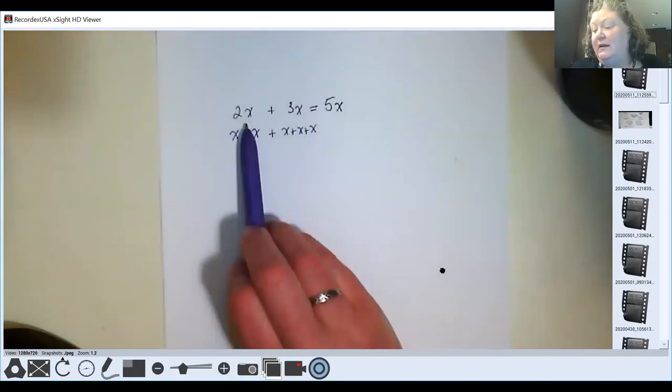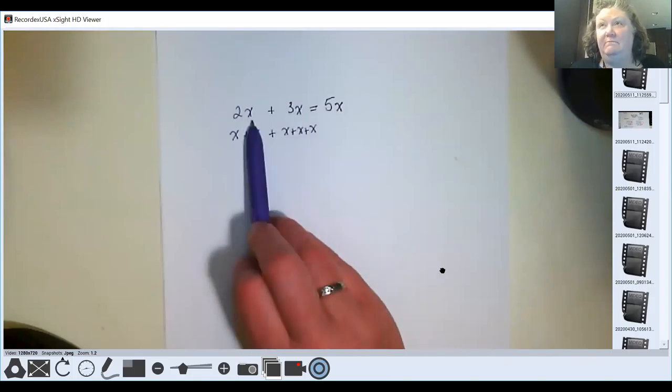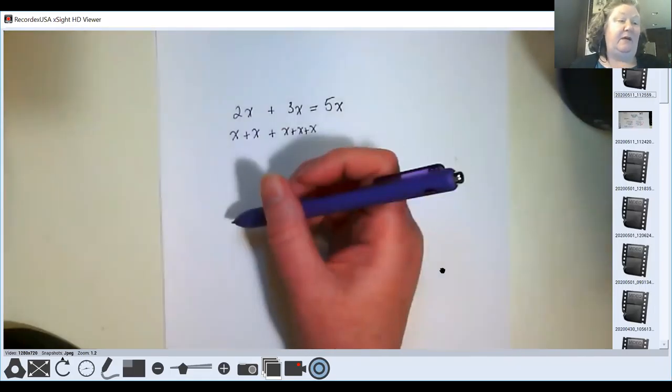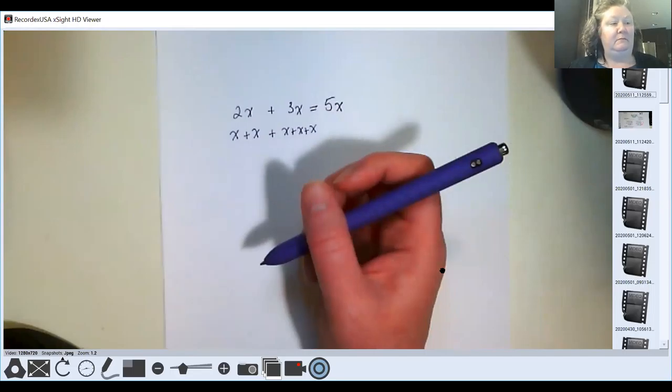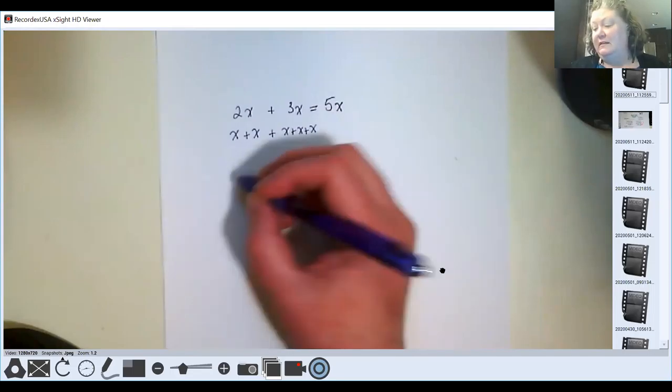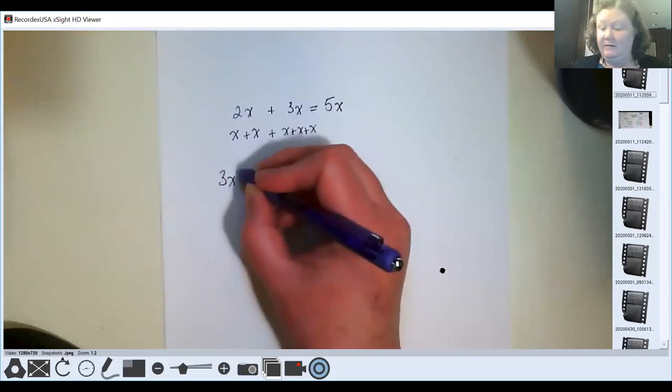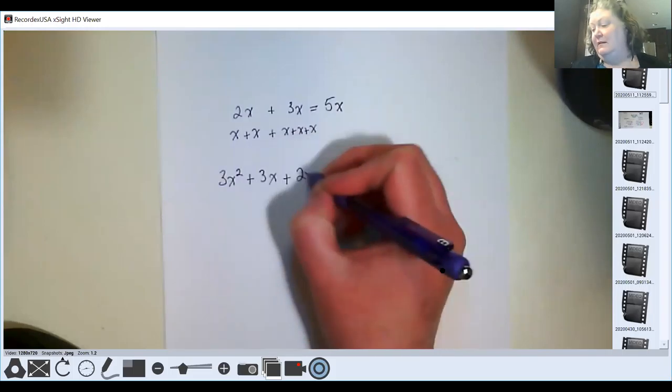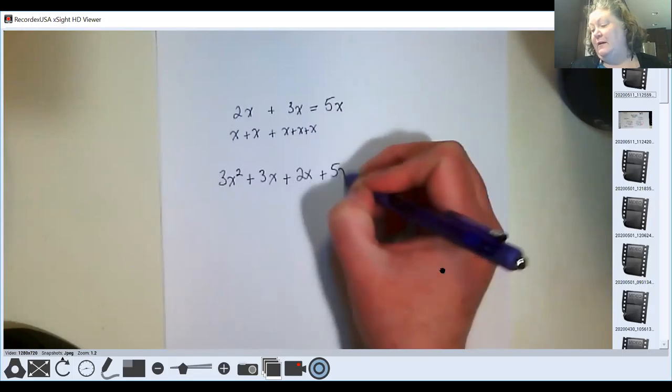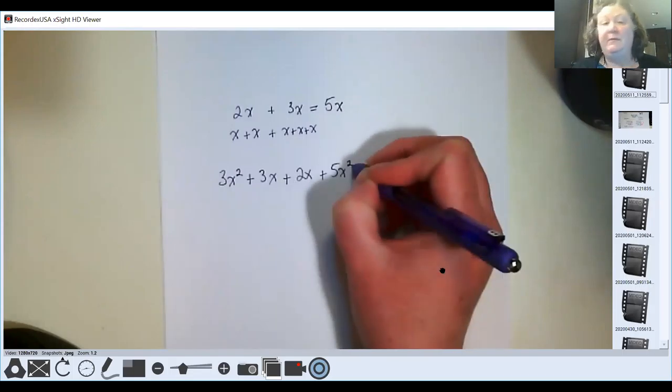And what makes us a like term is that they both have an X as its variable. I like to think of these as like families of variables, and the last name of this family is X. Now I could also have something that looks like this: 3X squared plus 3X plus 2X plus 5X squared.